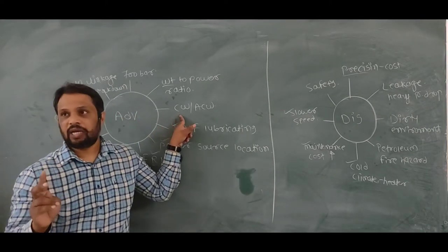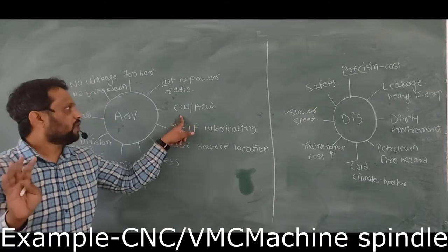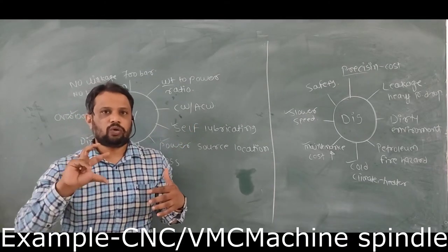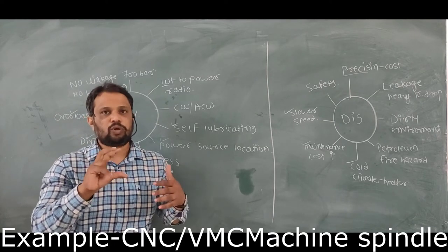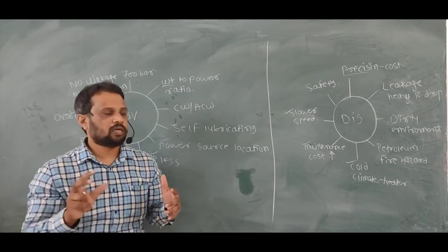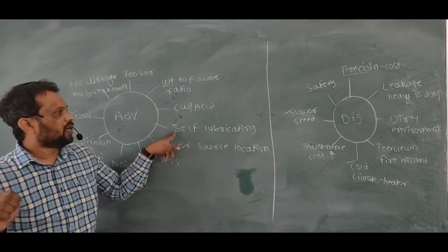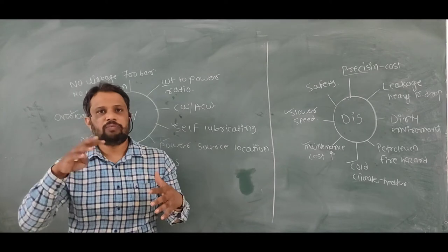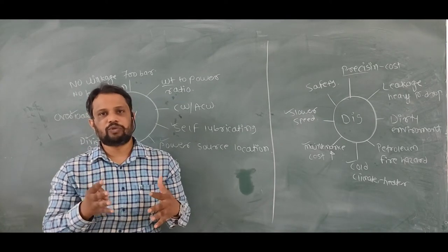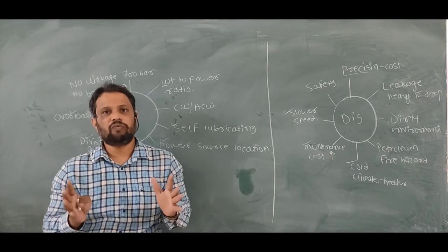After that, clockwise and anticlockwise. In hydraulic system you can rotate the system clockwise and anticlockwise in both directions. Self lubricating. As you know that in hydraulic system there is oil in whole complete system. So there is no separate need of lubrication.